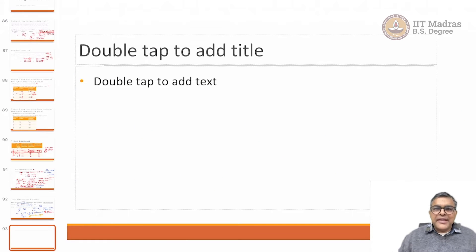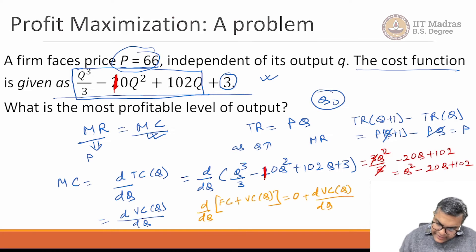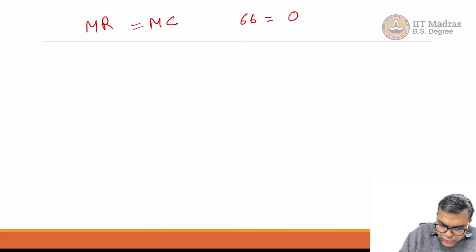What we have here is MR is equal to MC, and MR we have already obtained as 66, and MC we have as q² minus 20q plus 102. This can be written as (q minus 10)² plus 2, and this is the form I was interested in. This 66 can also be written as 64 plus 2, this will get cancelled.